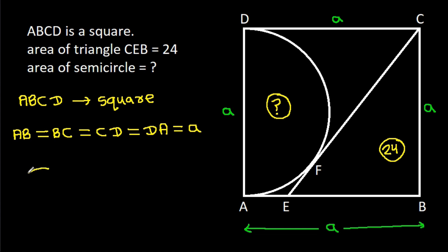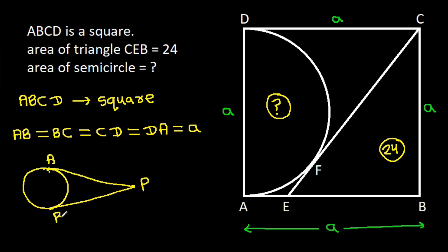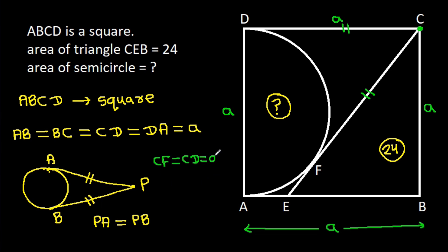In any circle, from an external point P, if we draw two tangents to the circle touching at points A and B, then PA = PB. Applying this property: from point C, CD = CF, so CF = CD = A.